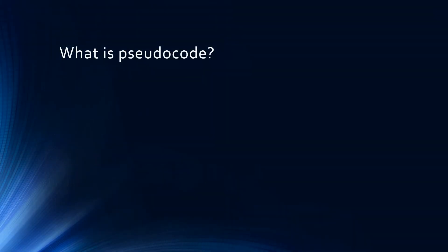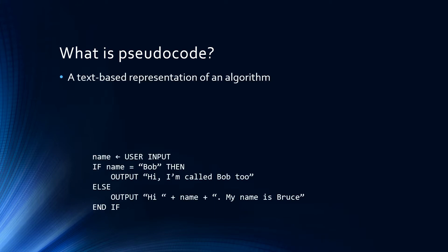Where flowcharts provide a visual representation of an algorithm, pseudocode provides a text-based representation of an algorithm. Pseudocode is used to design algorithms to solve problems independent of the language that might eventually be used to implement them.